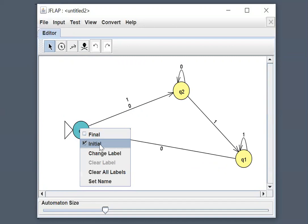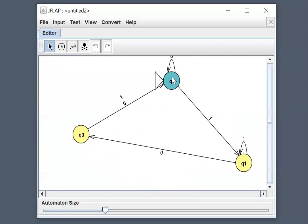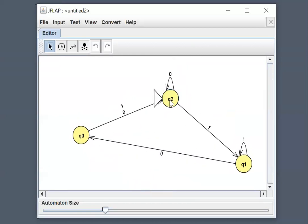Notice that q0 doesn't necessarily mean that you're the initial state. It's just a name that you give it. If you made this guy an initial state, it would still be a valid DFA. It would maybe be a bit more complicated to understand, but really any state can be an initial state as long as there is one.